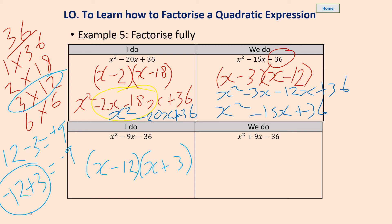Have a look at the we-do. What would you put into those brackets? This time you want positive 9 and subtract 36. Pause the video while you have a go. You should have x plus 12 and x subtract 3. 12x subtract 3x gives us 9x, and 12 times negative 3 gives us minus 36.